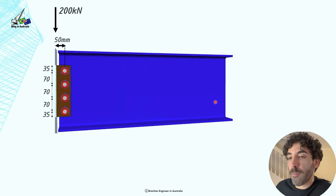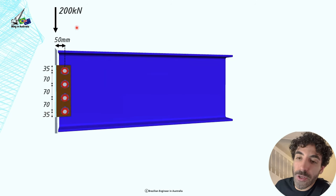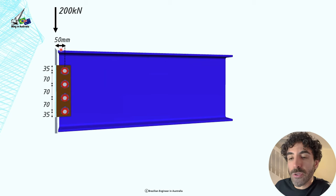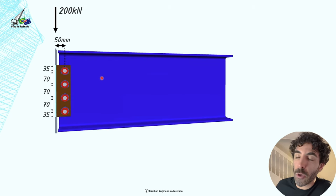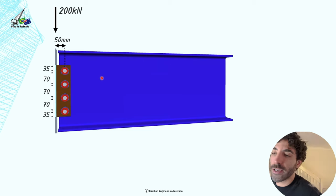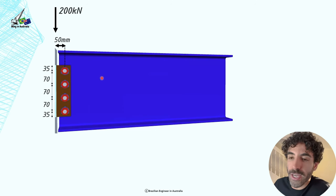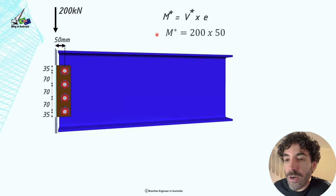So let's do a numerical example here so you can cement this concept in your head. So we've got a simply supported beam. We did the shear force diagram and we got that we have a 200 kilonewton shear at the end of the beam. And there is an eccentricity of 50 millimeters. The spacing between the bolts is 70 millimeters and the edge clearance is 35 millimeters. So the M* is equal to V* times e. M* is equal to 200 times 50. That gives us 10,000 kilonewton millimeters.